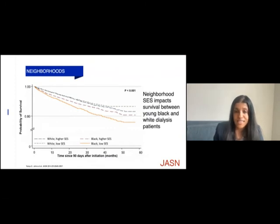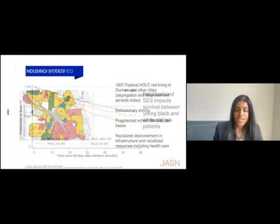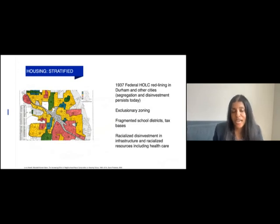Neighborhood socioeconomic status has a huge impact on survival, with worse survival among young Black versus white dialysis patients. When we do a deeper dive, it takes us back to: What are the racialized practices that got us to a place where our neighborhoods are so different? What you're looking at is the formerly redlined map of Durham, North Carolina, where I live.